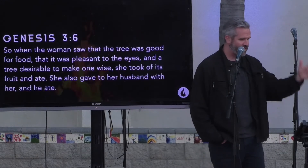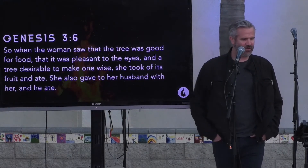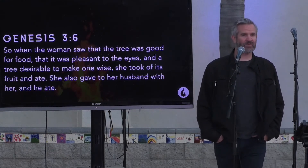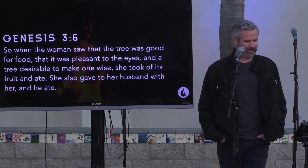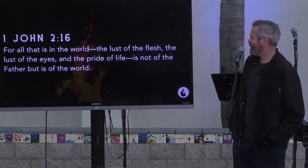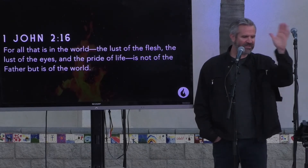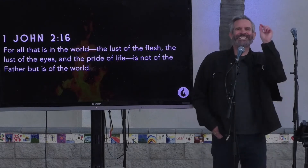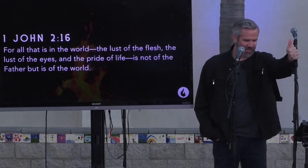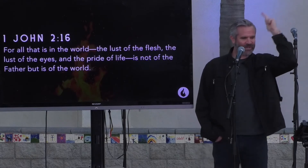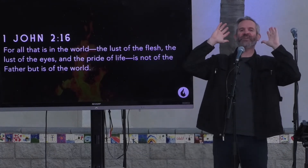Genesis 3, verse 4 and 5: 'The serpent said to the woman, you will not surely die. For God knows that when you eat of it, your eyes will be opened and you will be like God, knowing good and evil.' Fourth challenge — he wants to challenge the accuracy of God. When you challenge God's intentions, it's natural to challenge his accuracy. We can't trust his intentions, so how could we trust that he's accurate? The devil flat out lies: 'You will not die.' God is not accurate in what he's saying to you.